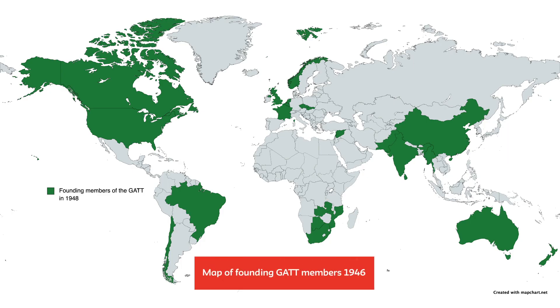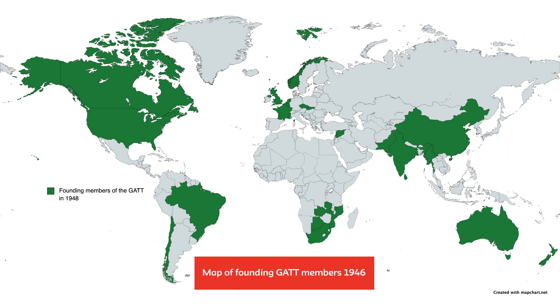How do countries expand their exports? This is a subject debated by policymakers. Different countries have accomplished it in different ways. One common policy measure is by agreeing with other countries to lower tariffs and other barriers to international trade. The Bretton Woods Agreement did not deal with international trade. This was handled by the 1947 General Agreement on Tariffs and Trade, commonly referred to as the GATT, between 23 industrialized countries who agreed to reduce barriers to international trade over time.